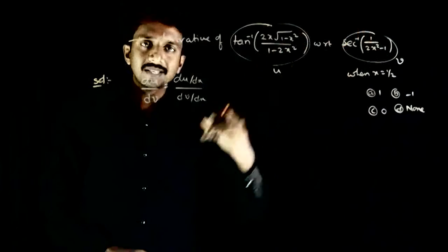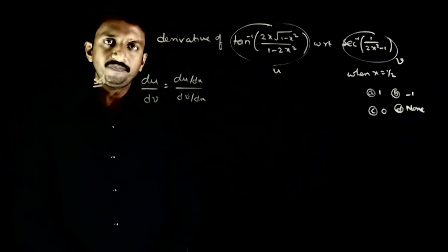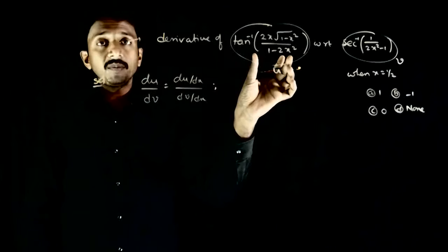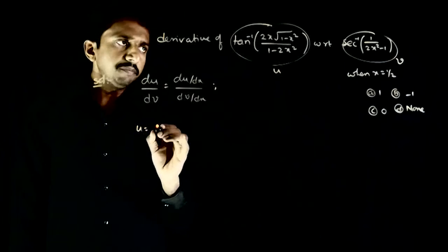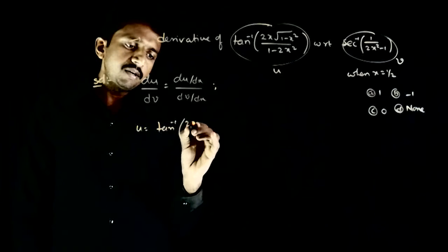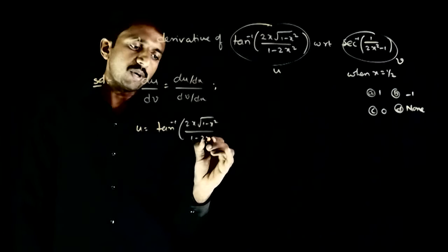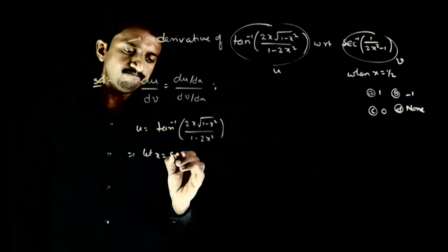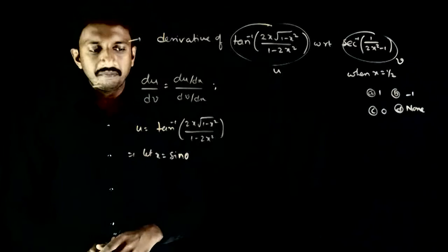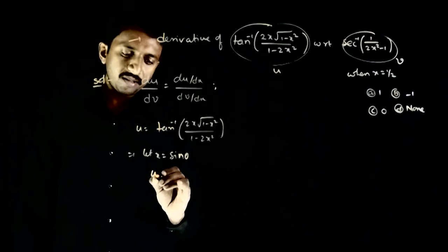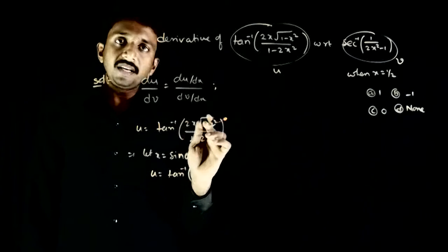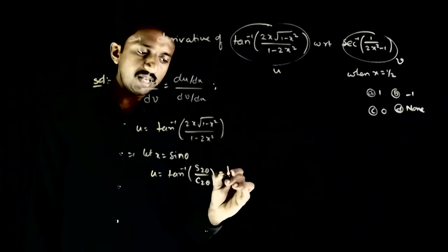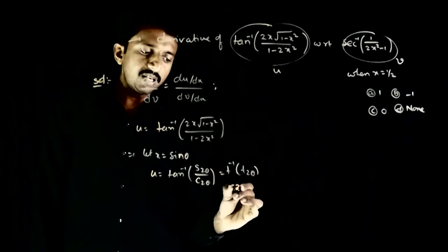We use the substitution method. u is equal to tan inverse of 2x√(1-x²) divided by 1 minus 2x². Let x = sin θ. Then u becomes tan inverse of 2 sin θ cos θ, which is sin 2θ, divided by 1 minus 2 sin²θ, which is cos 2θ. That equals tan inverse of tan 2θ, which equals 2θ.